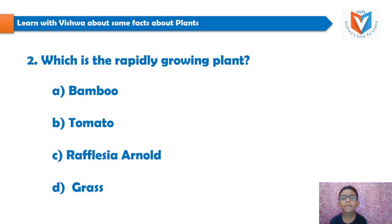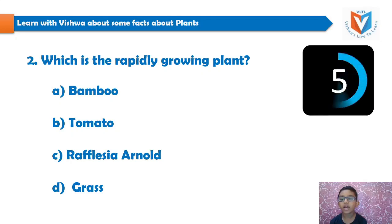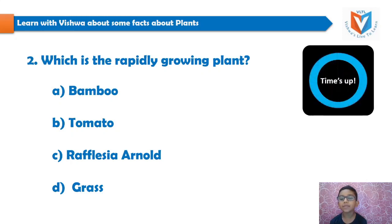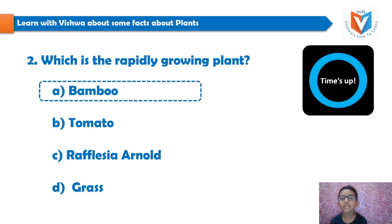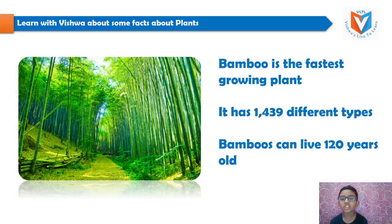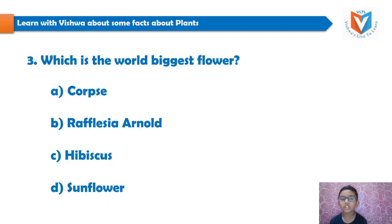And the second question: which is a rapidly growing plant? Bamboo, tomato, Rafflesia arnoldii, grass. Your 5 seconds time starts now... time's up. And the answer is bamboo. Bamboo is the fastest growing plant. It has 1,439 different types. Bamboos can live 120 years.